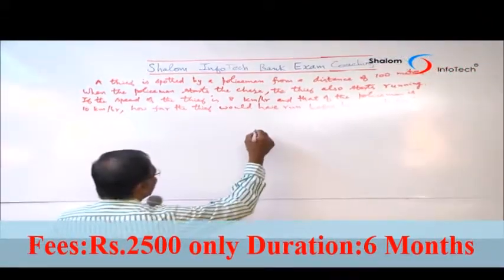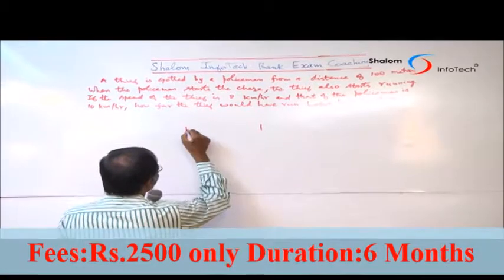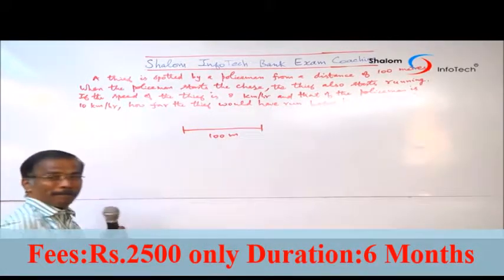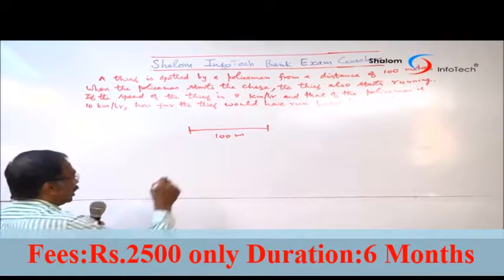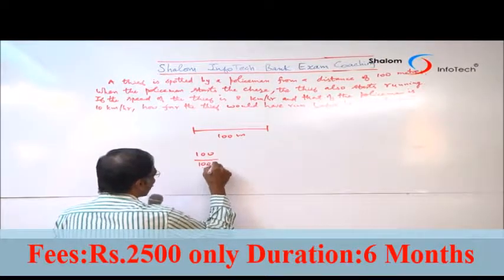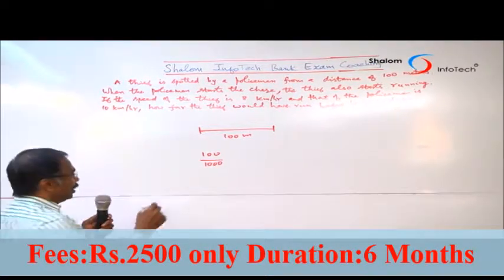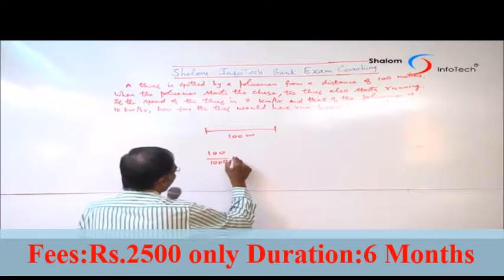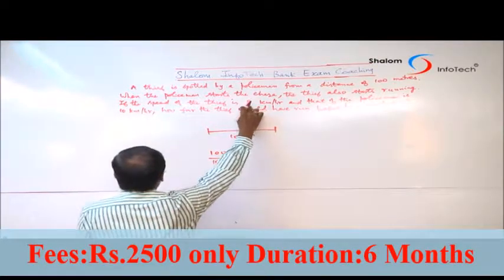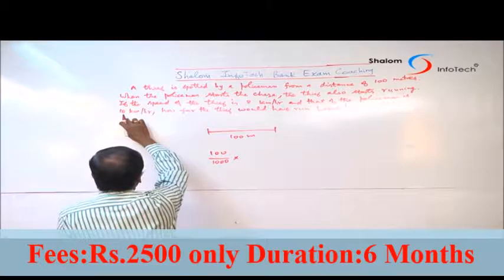The problem is that the thief is 100 meters ahead. 100 meters is 100 by 1000 kilometers — that is, 1 kilometer divided by 10, which equals 0.1 kilometers. The relative speed is 8 kilometers per hour. The policeman's speed is 10 kilometers per hour.